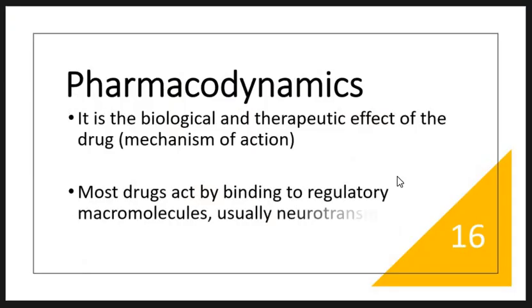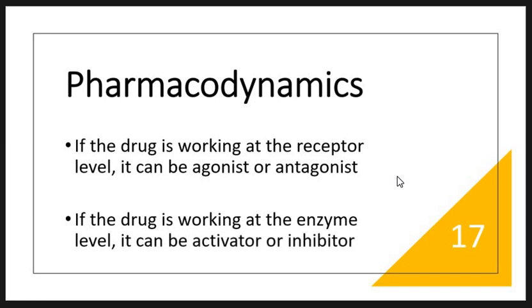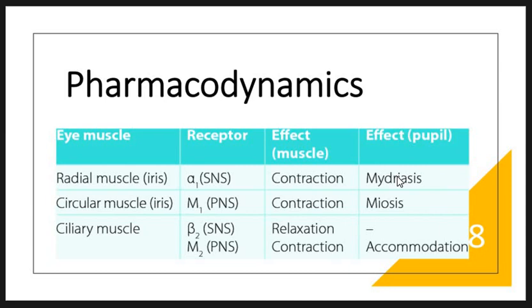Along with the anatomy of the eye, we must know that pharmacodynamically and pharmacokinetically the eye is a different organ. As far as pharmacodynamics is concerned, it is the mechanism of action of a drug. The drug has to bind to regulatory molecules such as neurotransmitters, hormones, receptors, or enzymes. It may act as an agonist or an antagonist. If the drug is acting at the enzyme level, it may be an activator or an inhibitor. In the eye, several receptors are present.